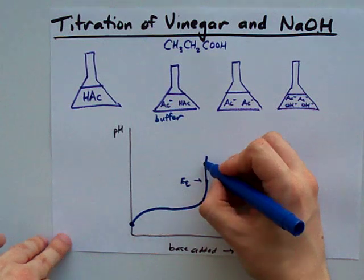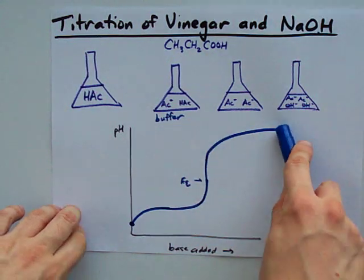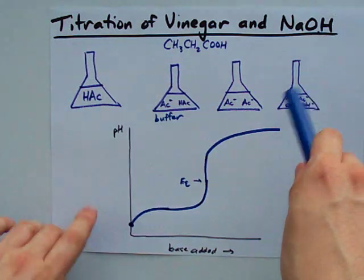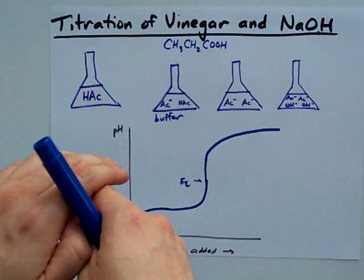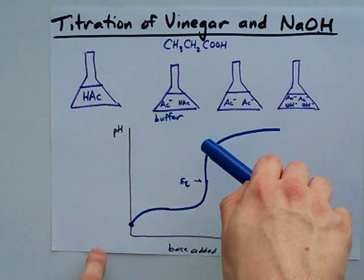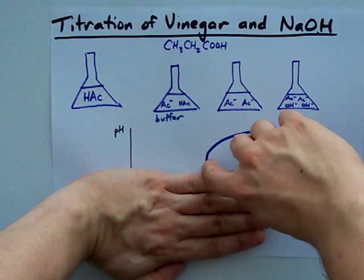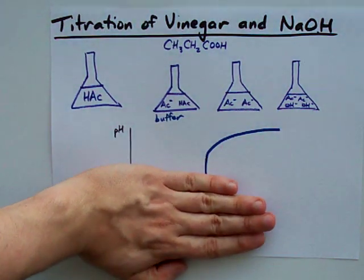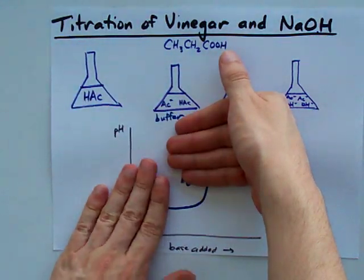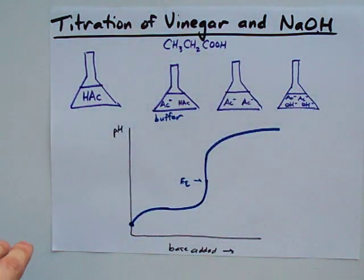If you keep adding NaOH, your pH just keeps rising and rising. The reason it flattens out at the top is because every time the pH goes up one unit, the concentration of OH has to go up by a factor of 10 — it is a logarithmic scale. So you have to keep adding 10 times as much base to raise the pH by a single unit. This looks just like a log graph, and if you think about it, a vertically flipped log graph, because pH is the negative log of H+.